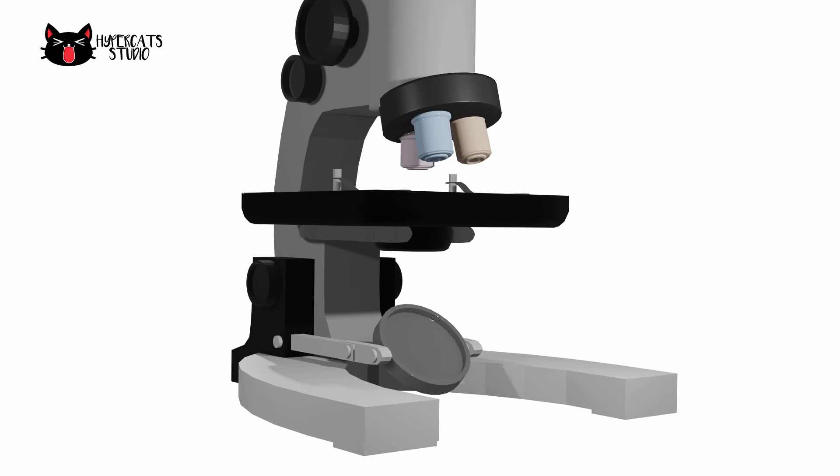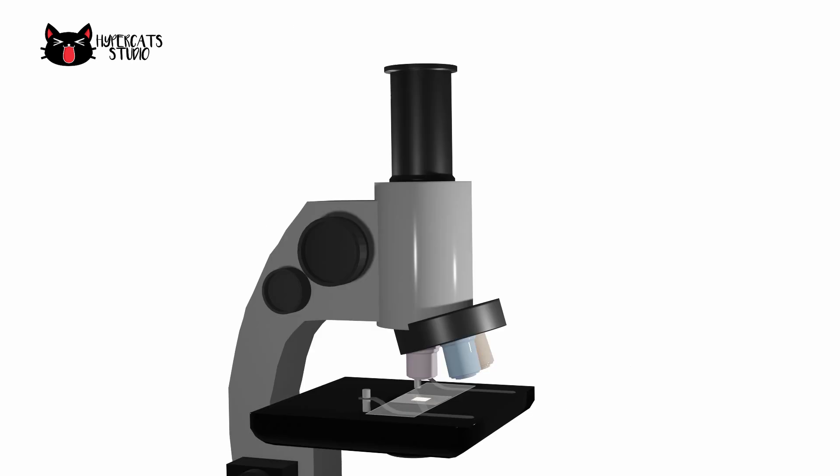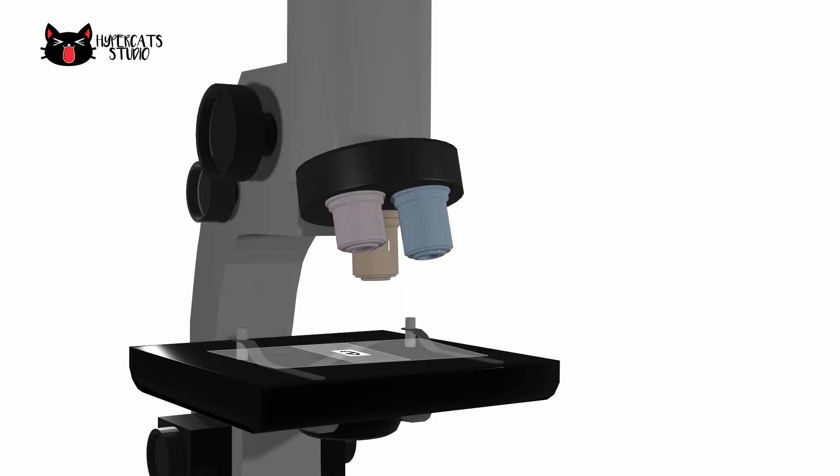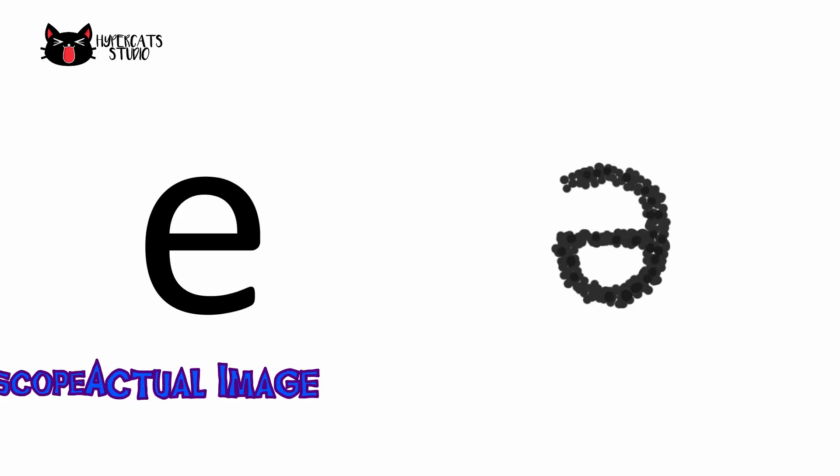Look through the eyepiece and adjust the mirror to find the field of view of the microscope. Slowly lower the body using the coarse adjustment knob. Turn the fine adjustment knob until you can see it clearly. How do you compare the image on the microscope to the actual image of letter E?